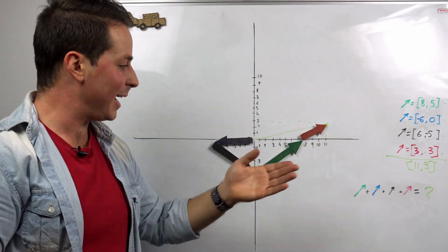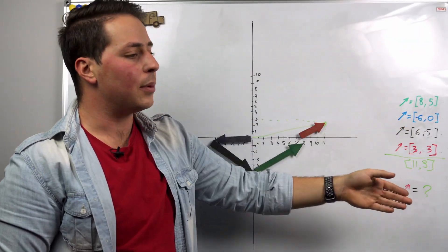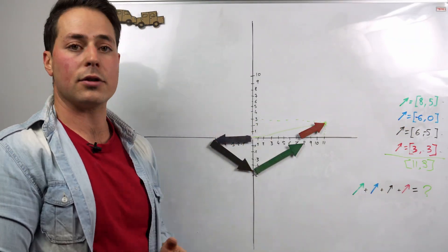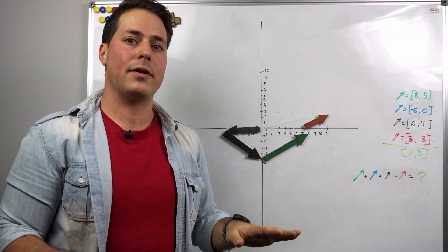Whoa! I have the same result that I got graphically. This is the fastest way you can do it. Just sum up the components. Don't worry about how the vectors look. Aside from using an online calculator, there's really no faster way to do it.